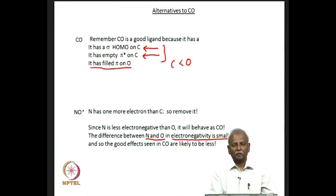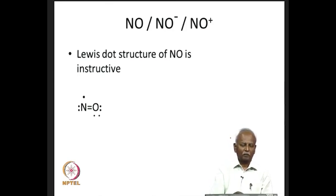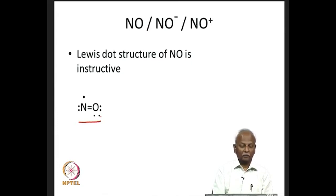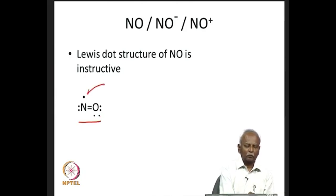Most of this lecture will deal with the NO⁺ ion. It is instructive to look at the Lewis dot structure of NO. We find two lone pairs on oxygen, a pair of electrons on nitrogen, and a single electron on nitrogen as well. This is the best Lewis structure — the closest we can get to the octet on both atoms. Nitrogen has seven electrons (less than an octet) while oxygen has an octet. The single electron on NO is localized on nitrogen.